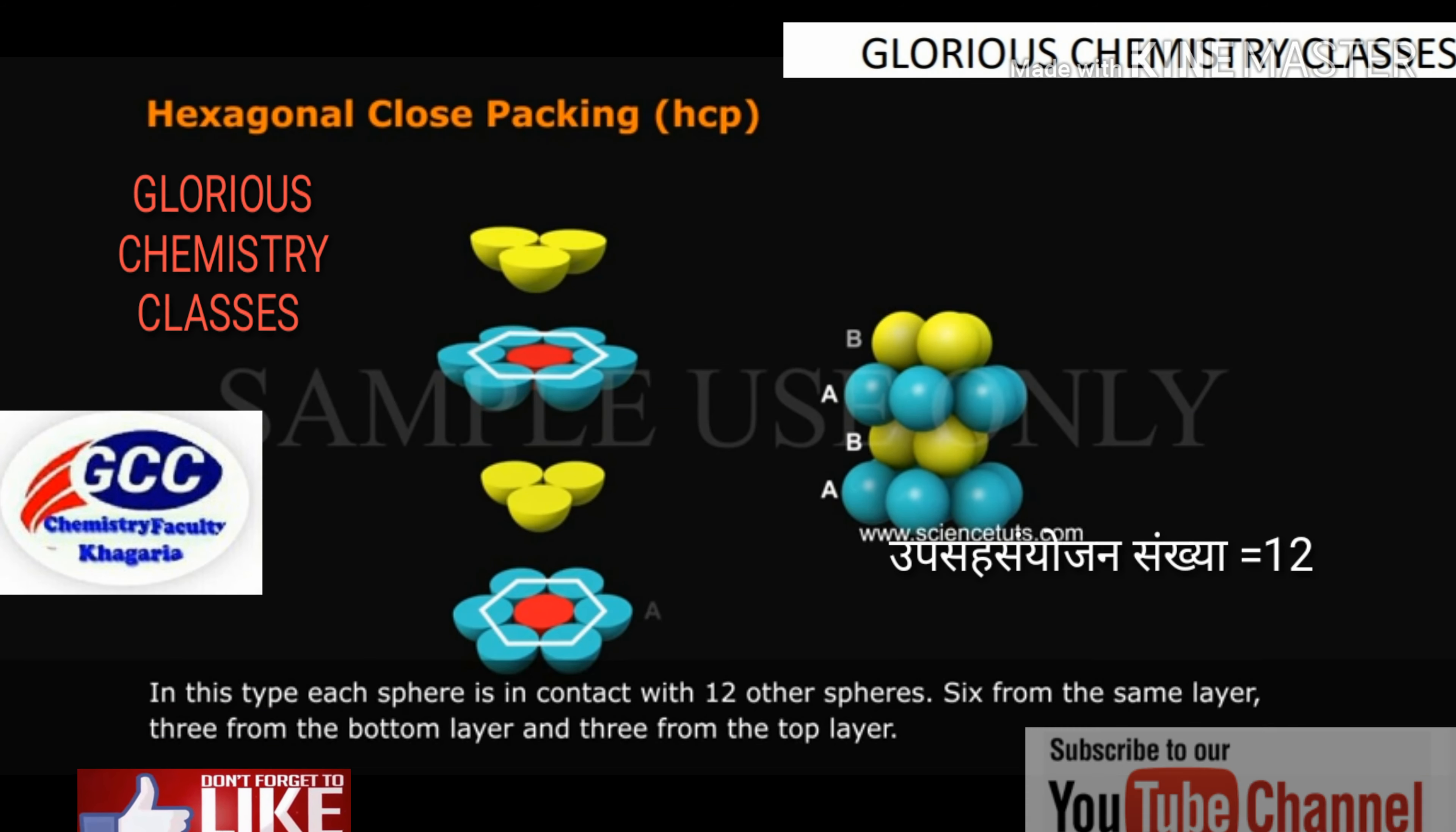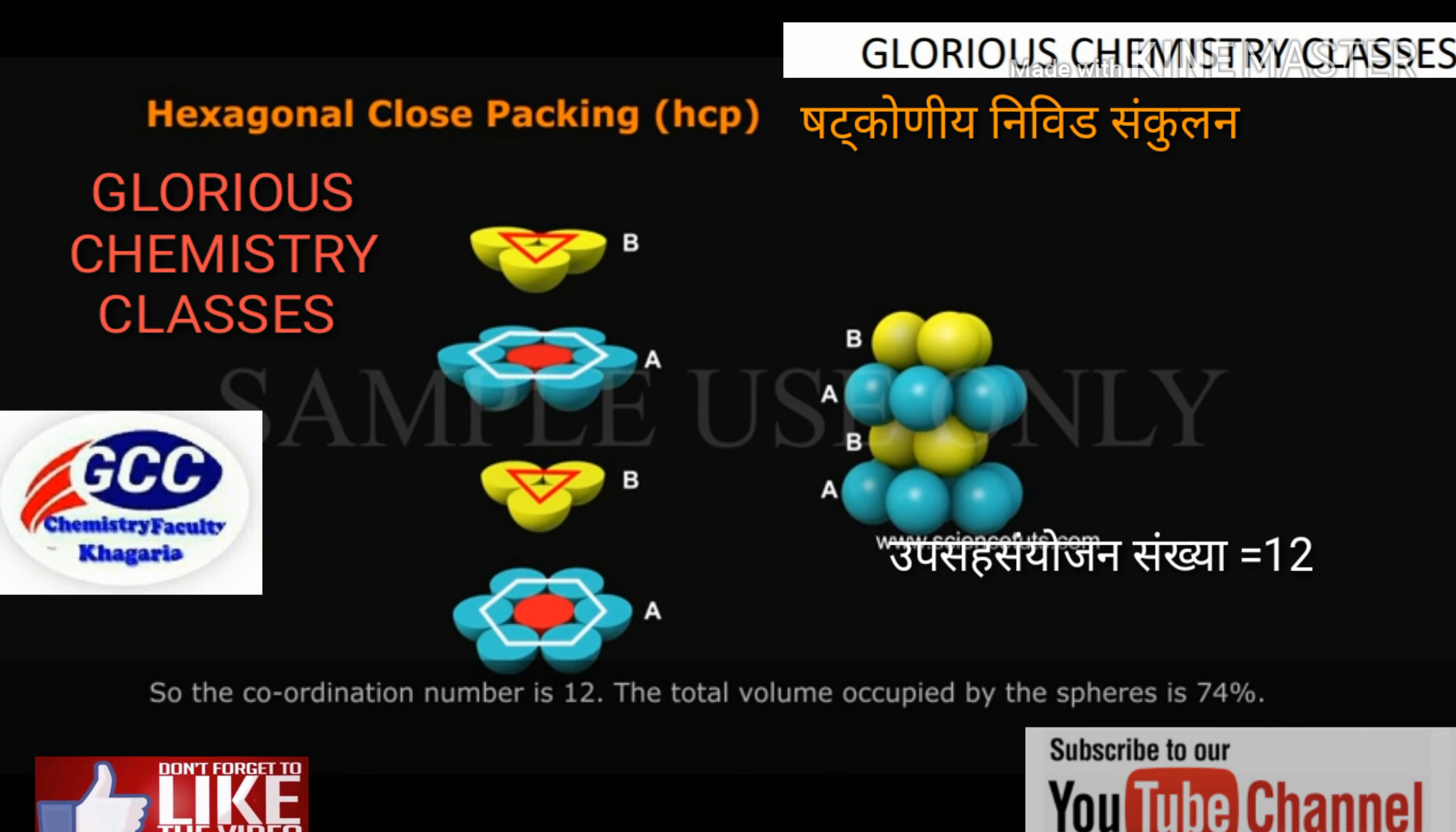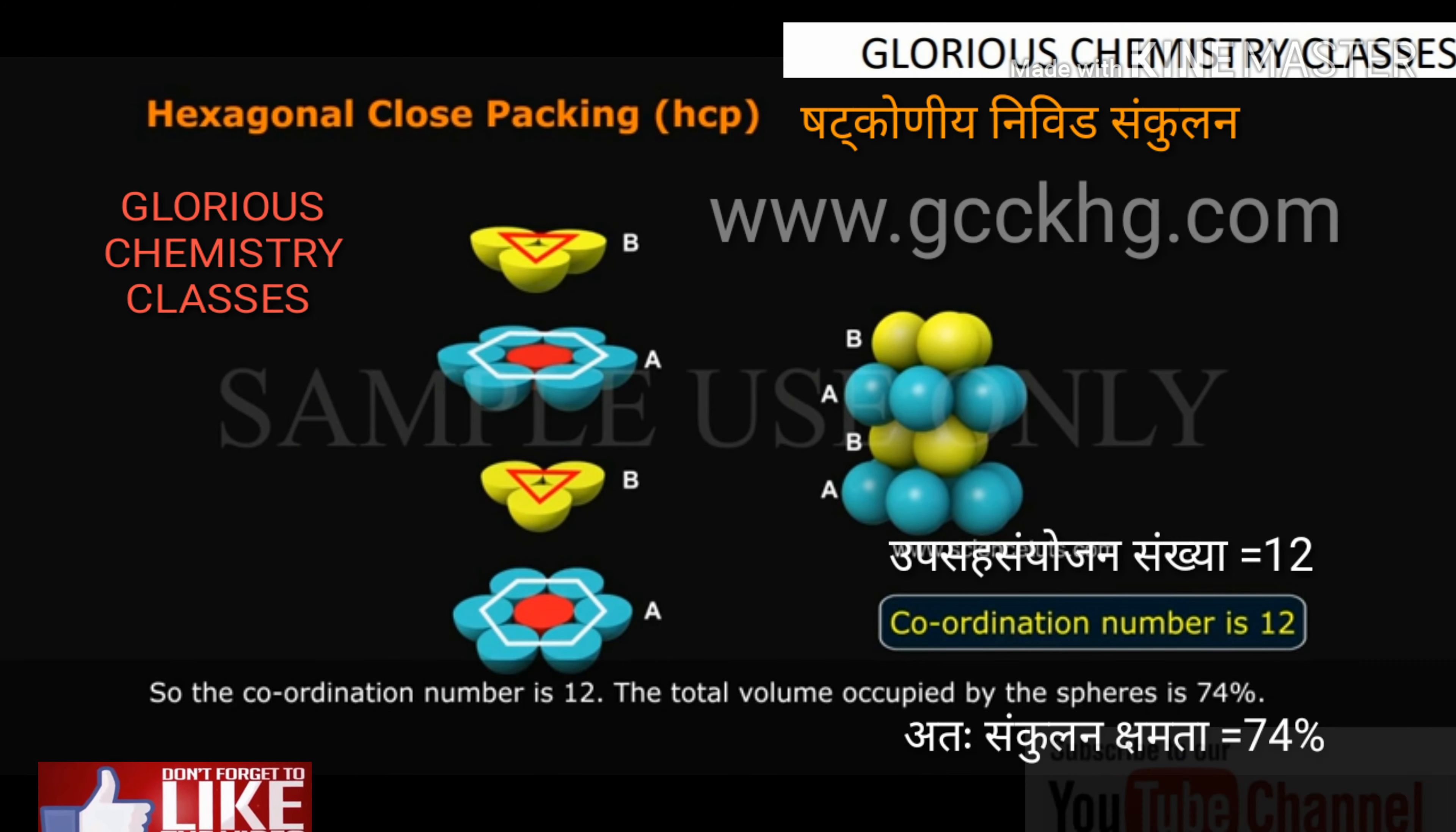In hexagonal close packing, each sphere is in contact with 12 other spheres: 6 from the same layer, 3 from the bottom layer, and 3 from the top layer. So the coordination number is 12. The total volume occupied by the sphere is 74%.